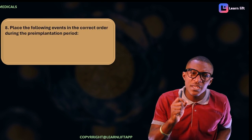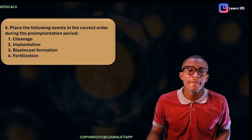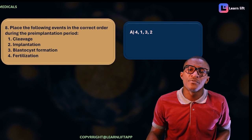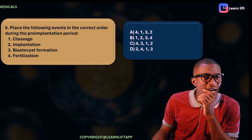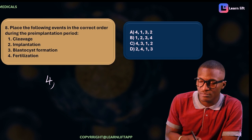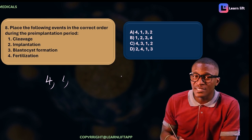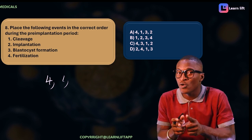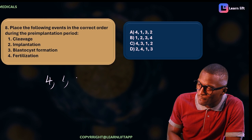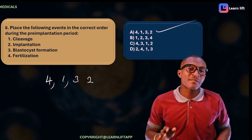The next question says: place the following events in order during the pre-implantation period. Events: cleavage, implantation, blastocyst formation, fertilization. The first thing that happens is fertilization, then cleavage begins. After cleavage comes blastocyst formation, because what gets implanted is the blastocyst. Last comes implantation. So the order is: fertilization, cleavage, blastocyst formation, implantation — making option A the answer.